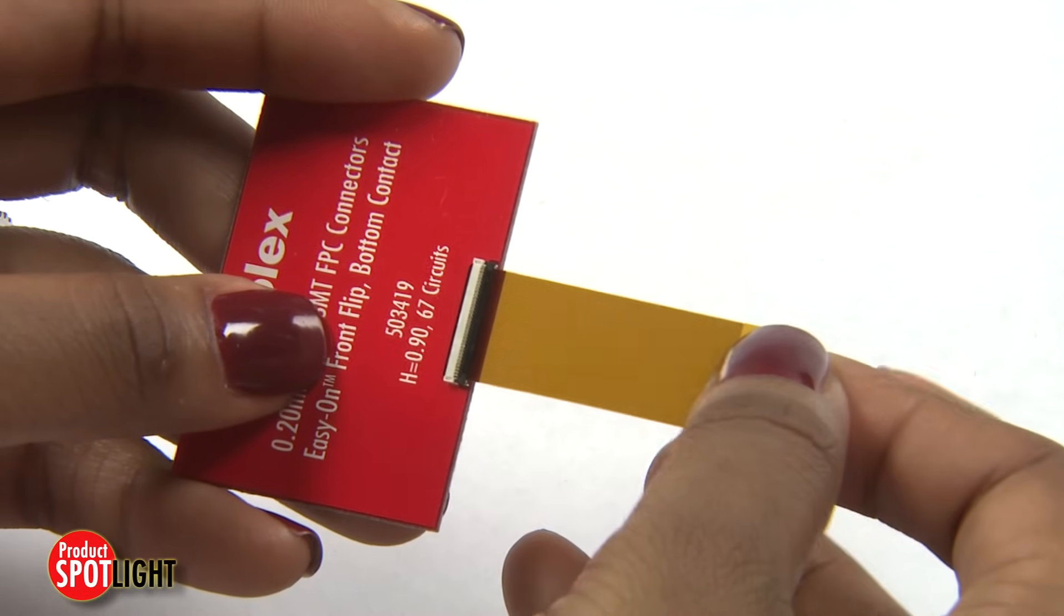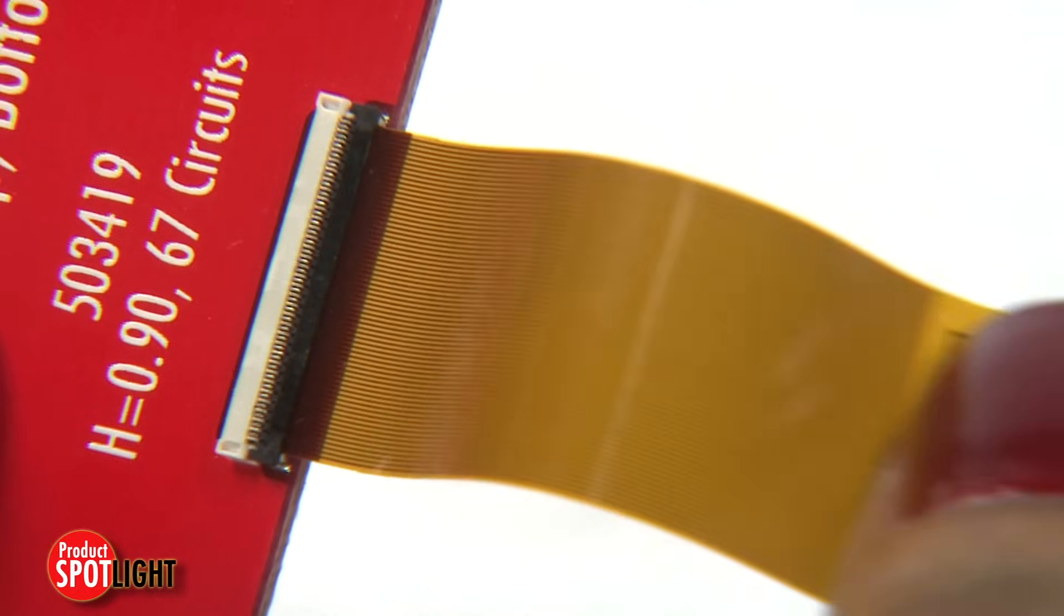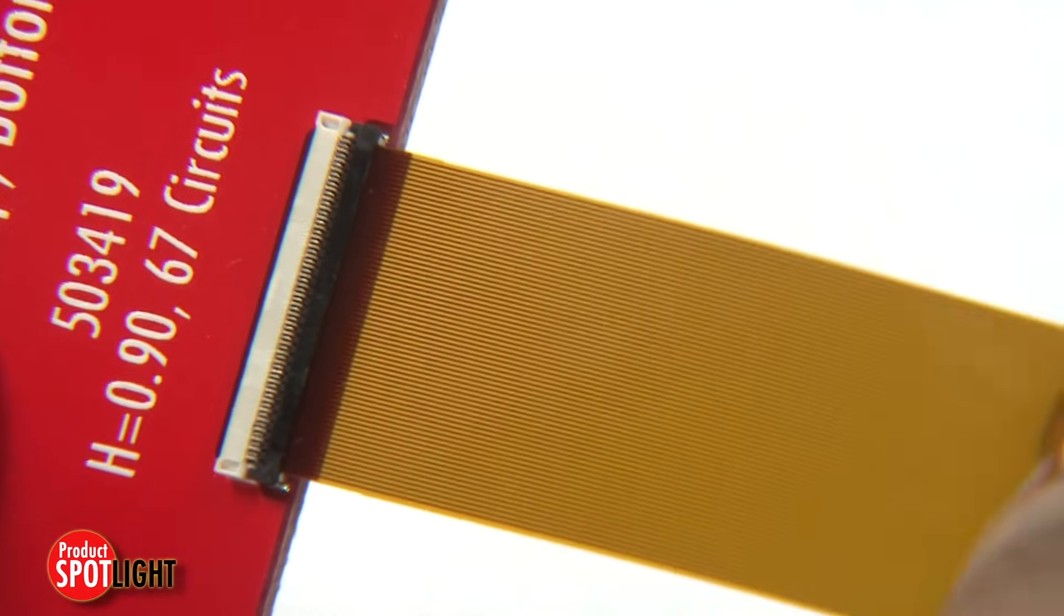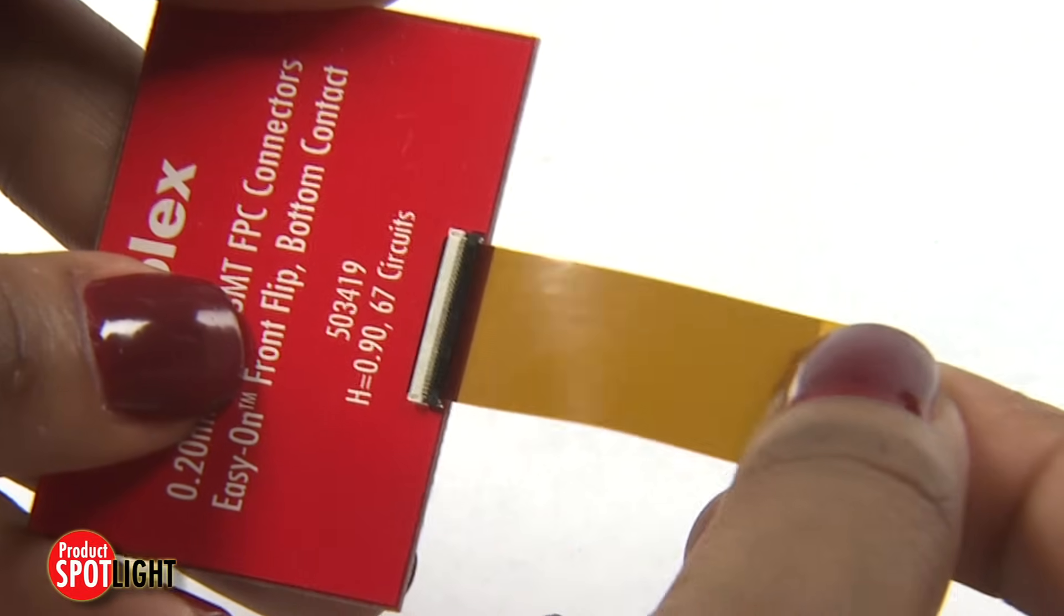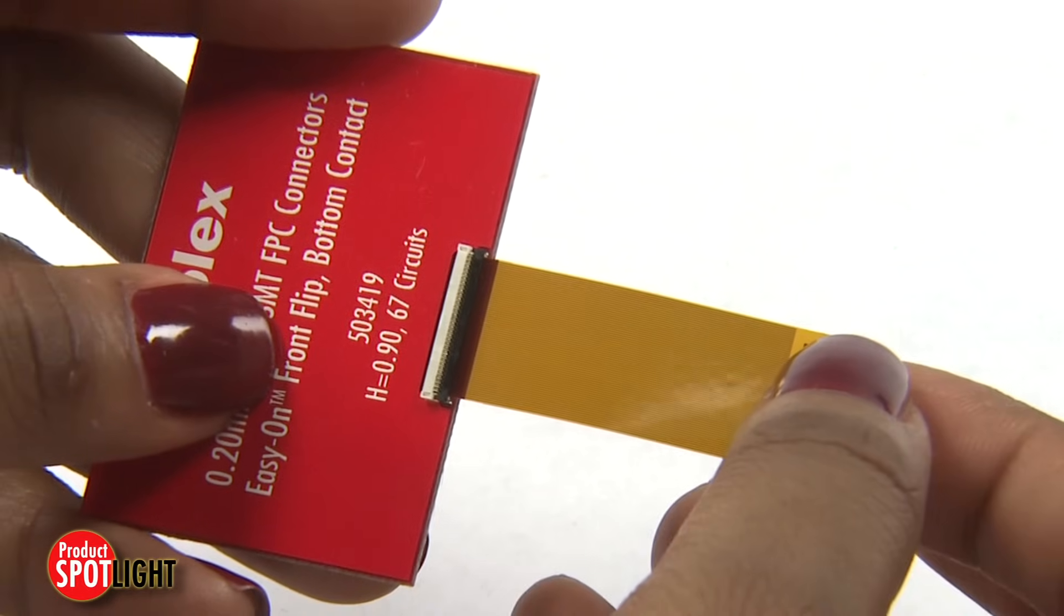Internally, movable contacts provide secure cable retention as the terminals move and maintain contact with cable pads, even if the cable is pulled up or down.